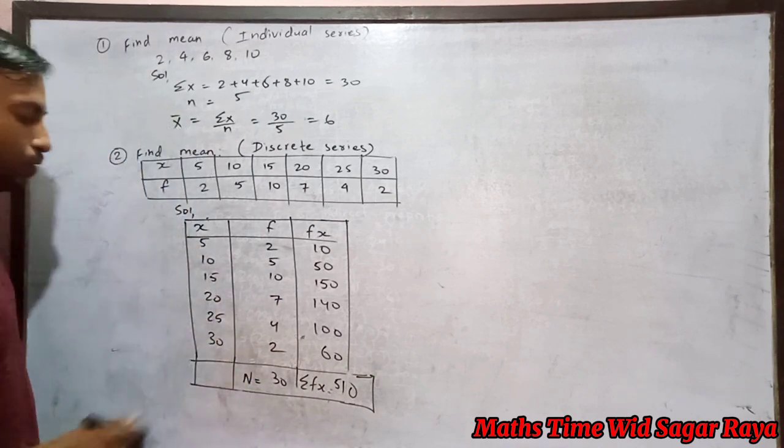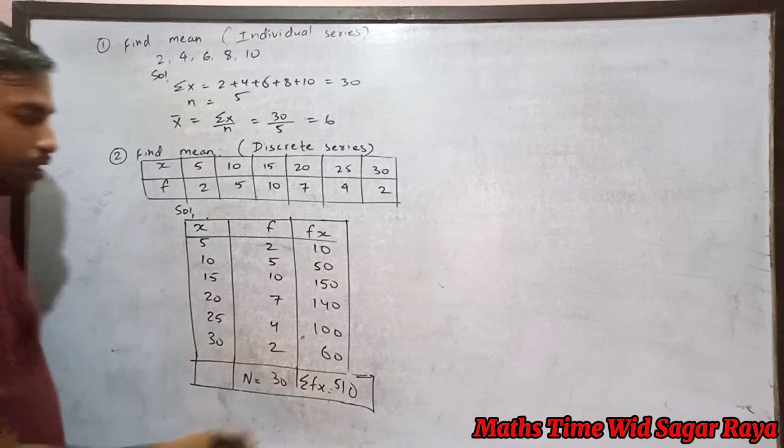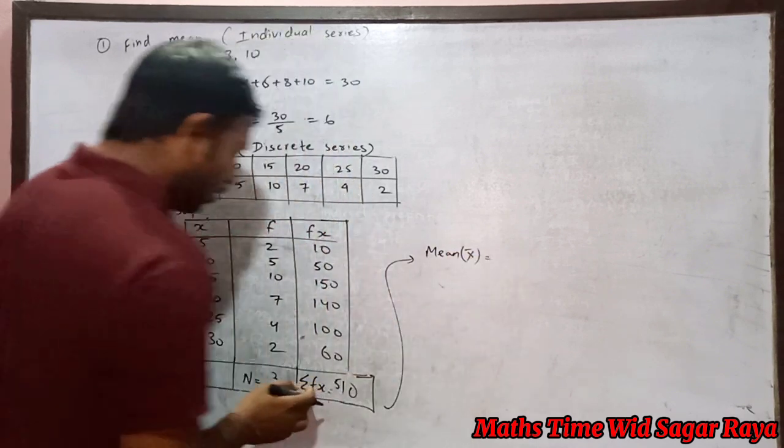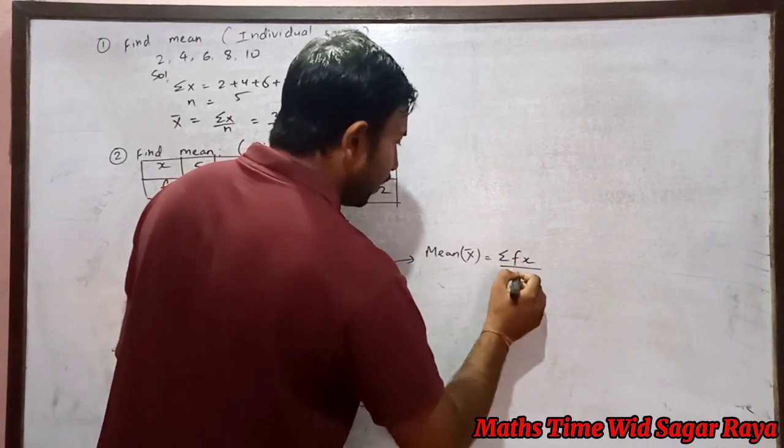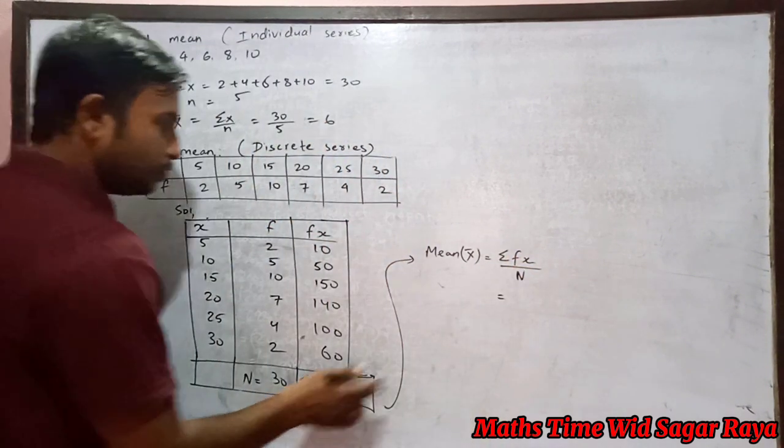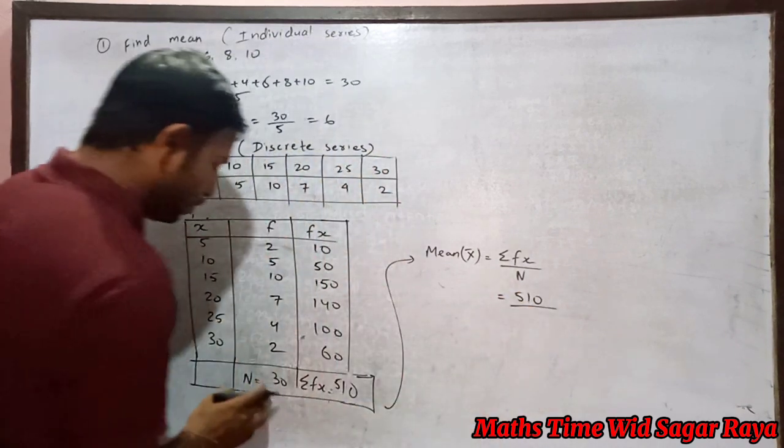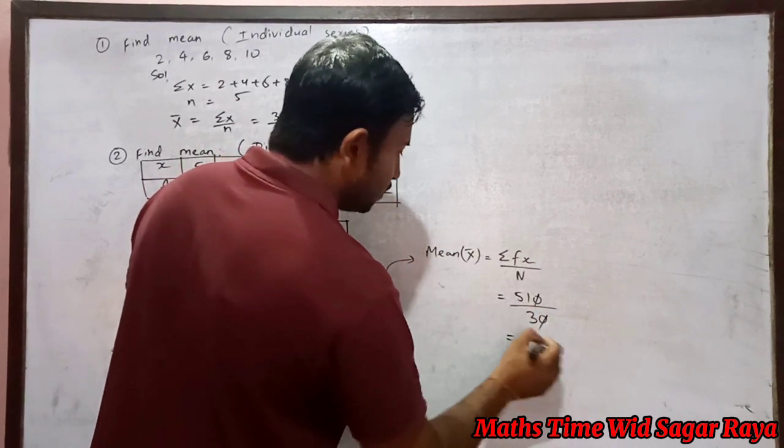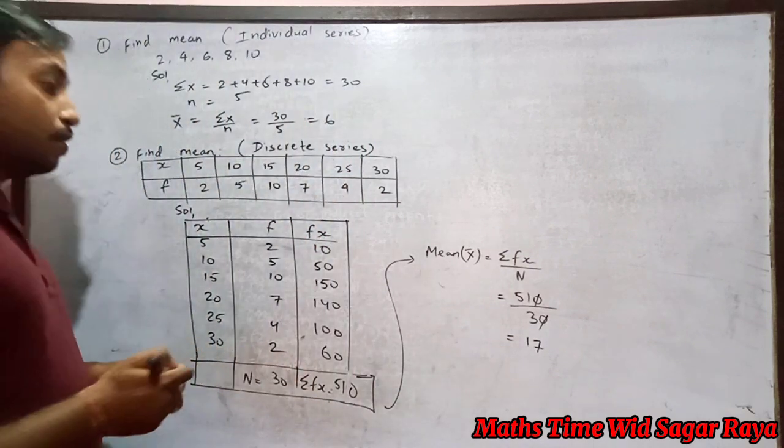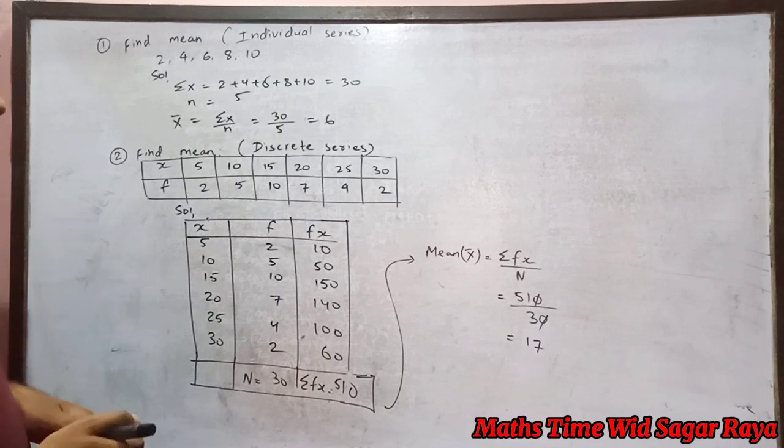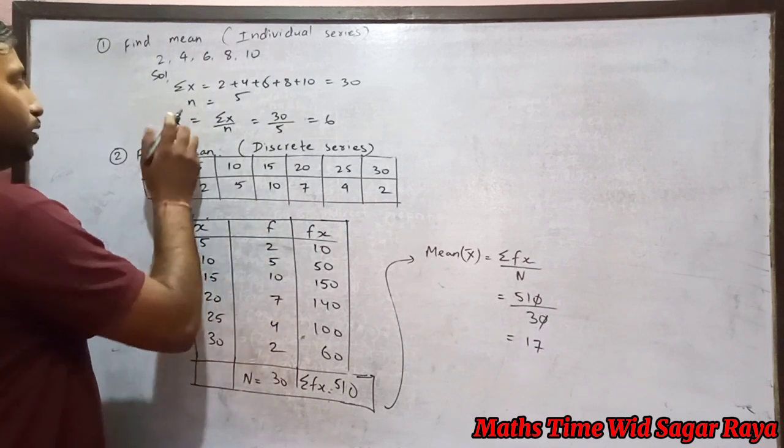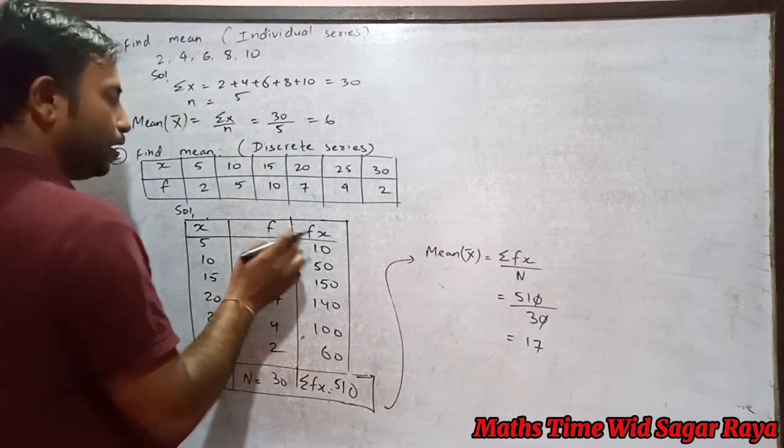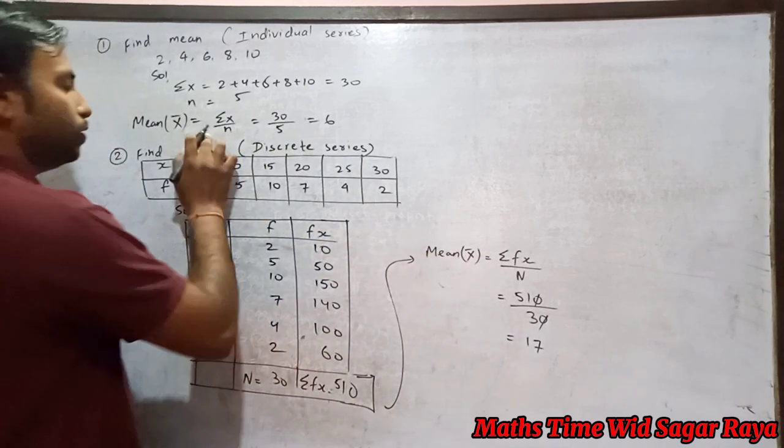After this use the formula of mean. The formula for mean in discrete series is sigma fx by capital N. So 510 by n equals 30, so 510 by 30 equals 17. Our answer is 17. You can see the formula here - mean formula is sigma x by n for individual series, sigma fx by n for discrete series where we have frequency also different.